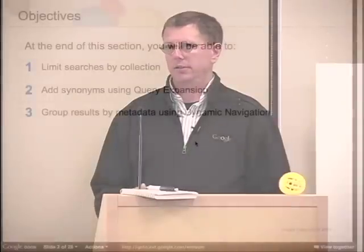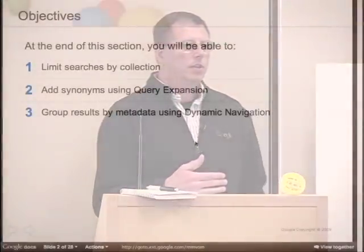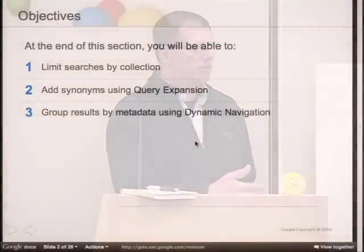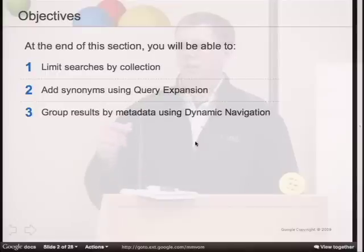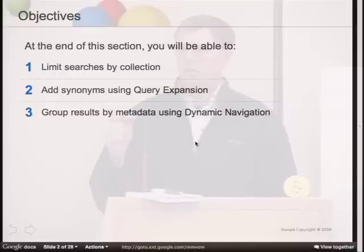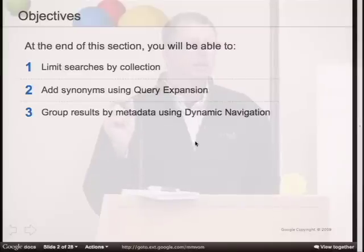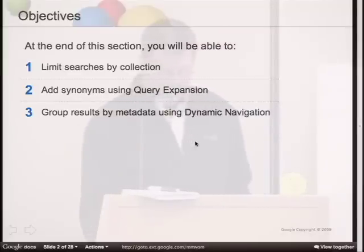Collections are used to limit a search over a range of documents from a given source based on URL pattern. So if you want engineering to search documents from the eng server or from the support ticket server, you could set up a collection. When a user runs a search, there's a query parameter called 'site' that identifies which collection to look in. You can think of it as post-filtering on the index.